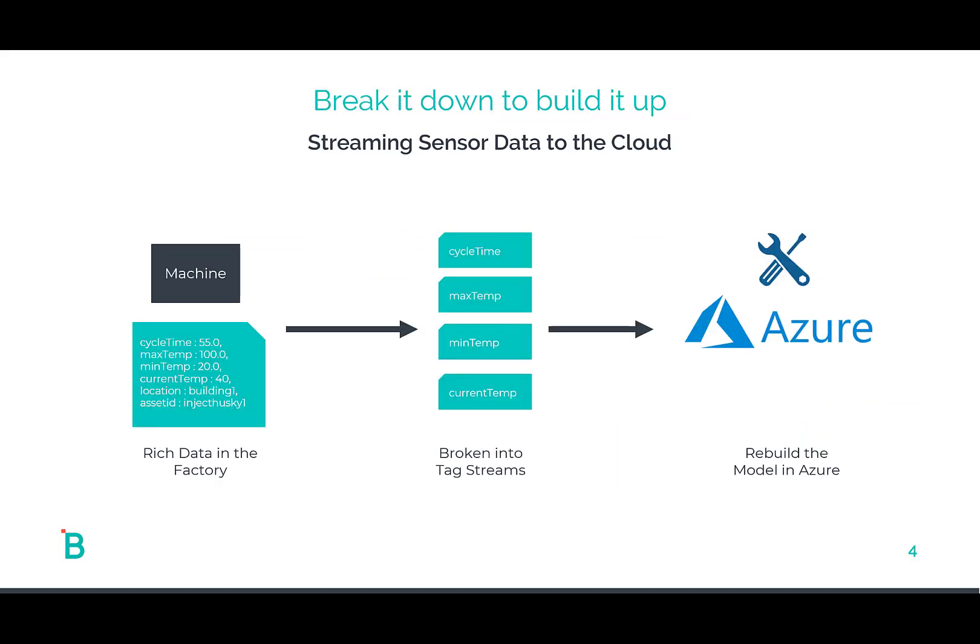Let me break that down so you can see it clearly. We have a machine with a rich data model on the factory floor. We've taken that, smashed it up into tag streams, and now we're trying to rebuild that same data model in the cloud. Do you see the problem?